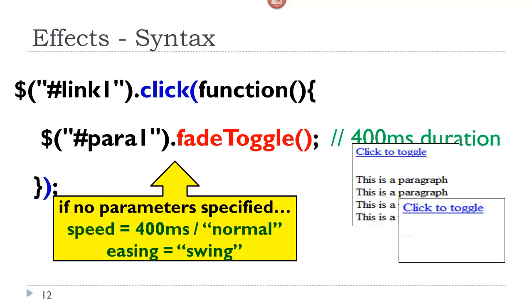So here we have the syntax, and here again on the right, we would slowly see this, and then appear, and then disappear. When we click on the link, we are applying the fade toggle method to the selector, the paragraph, so it would slowly fade in and slowly fade out. Here again, no parameters are specified, so the speed is 400 milliseconds, and the easing is swing.